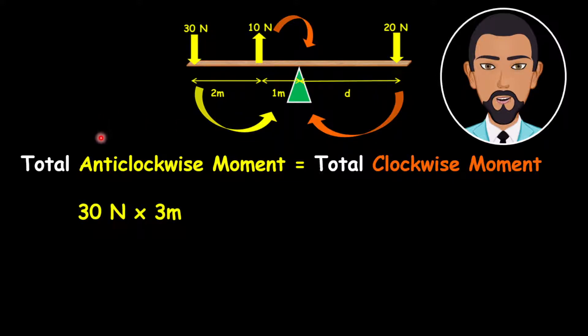So here we're going to have 30 newtons multiplied by 3 meters. Now why 3 meters is because the distance from the 30 newtons towards the pivot is 3, 2, and 1. The entire distance from the 30 newtons to the pivot is 3 meters.